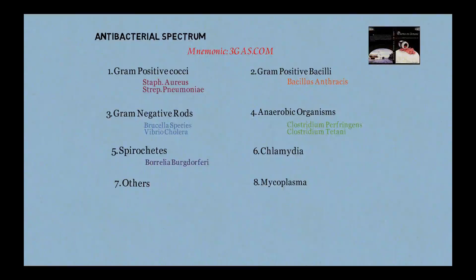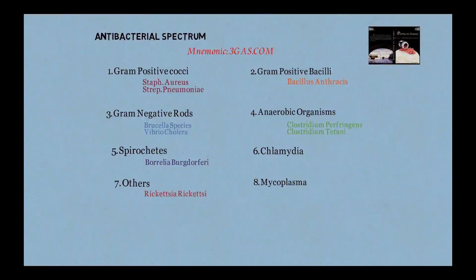Among spirochetes, a major pathogen is Borrelia burgdorferi, which causes Lyme disease — the hallmark feature is the bull's-eye skin lesion. Chlamydia causes sexually transmitted diseases such as urethritis, pelvic inflammatory disease, and lymphogranuloma venereum. Under 'others,' Rickettsia rickettsii causes Rocky Mountain spotted fever.